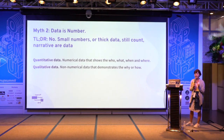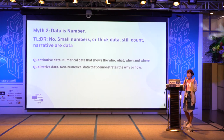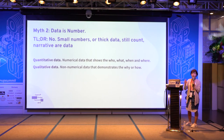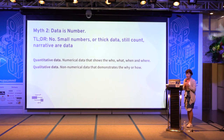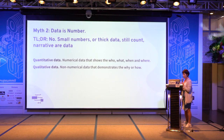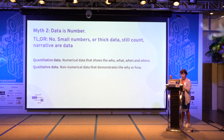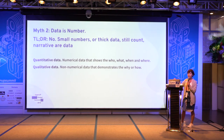The second myth is that data is just a number. Actually that's a bit true, but not really — sometimes data can be zero, undefined, or not be a number at all. Sometimes data cannot be translated into numbers. Data can be categorized into two types: quantitative and qualitative. If you're a UX researcher, you know qualitative data. Some datasets have numbers showing who, what, when, where. But some data just demonstrates your feelings or the user's feelings — the why or how, like 'I like this color' or 'I prefer blue.' That cannot be converted into zero or one.